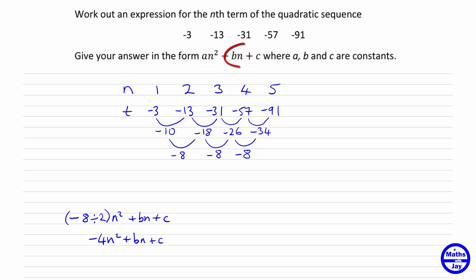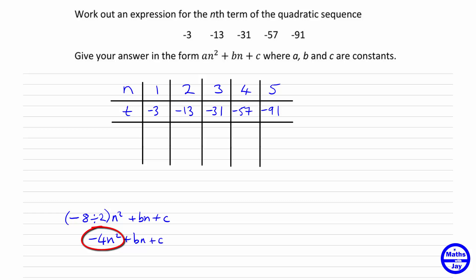Now the bn plus c is simply a linear sequence and that's really easy to work with. So what we're going to do is subtract negative 4n squared from each of the terms in our sequence so that we leave ourselves with a linear sequence which will be easy to work with. Let's just clear out some of this working. So what we want to do is subtract negative 4n squared. In other words, we're going to add 4n squared.